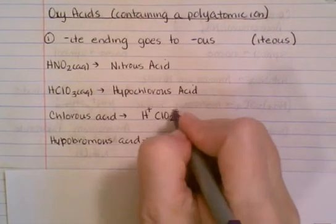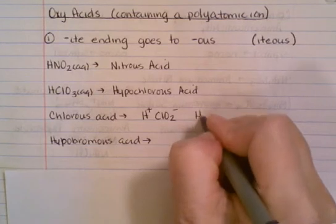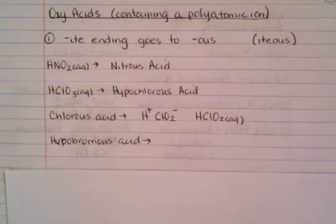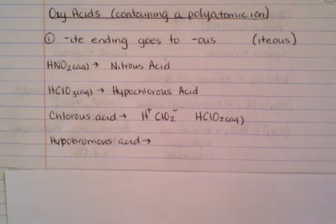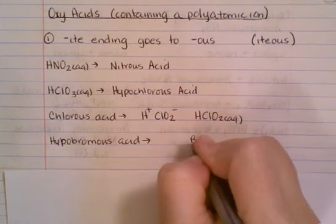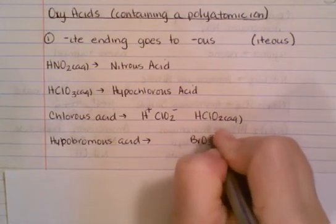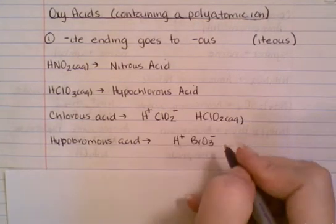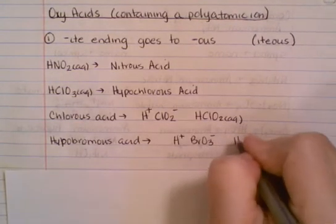So this becomes HClO2(aq). Now what about hypobromous acid? Bromous means it came from bromite—hypobromite. What does hypobromite look like? It's BrO with a minus one charge. We've got hydrogen with a plus one charge and they cancel one another out, so we're just going to squish them together and add (aq).